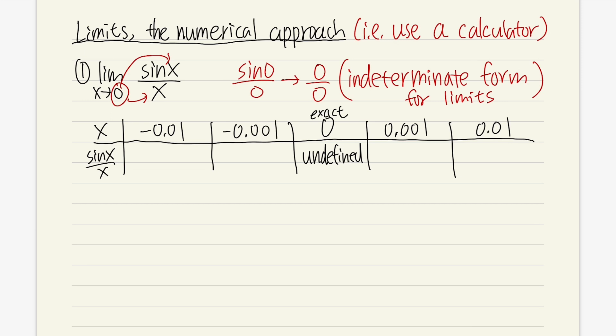Right here, just go ahead and use your calculator. Enter 0.01 into the X. So we get sine of 0.01 over 0.01. And make sure your calculator is in the radiant mode. Work this out. We will get 0.99998.